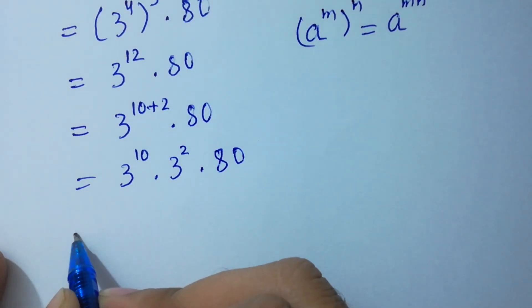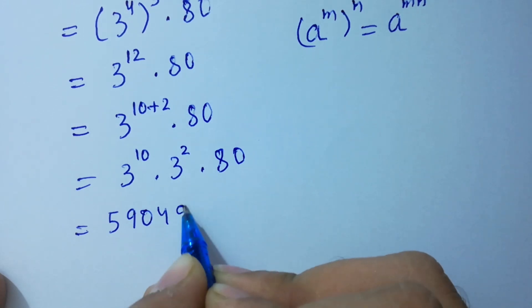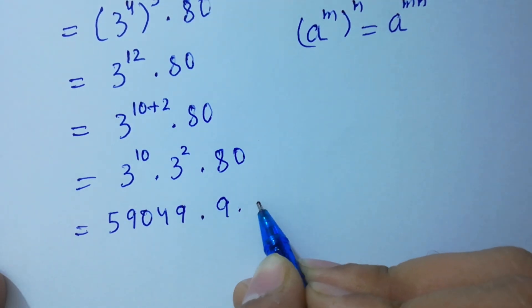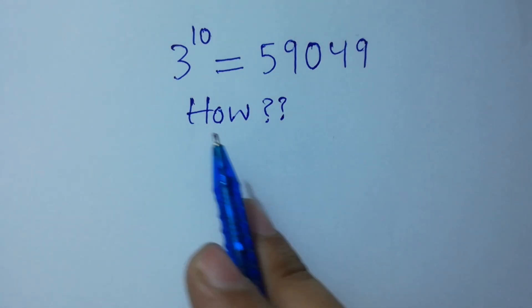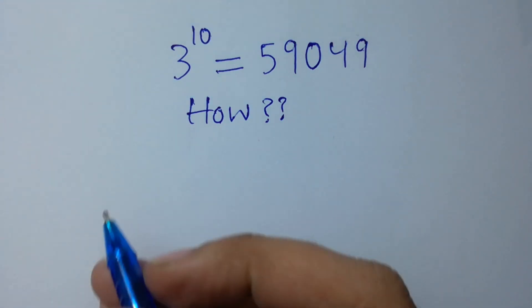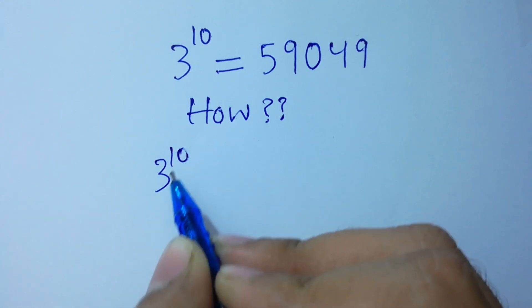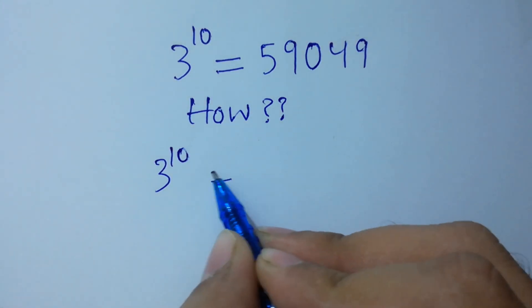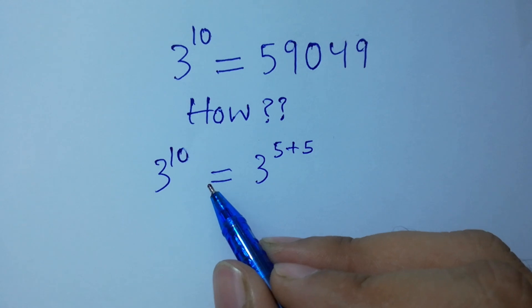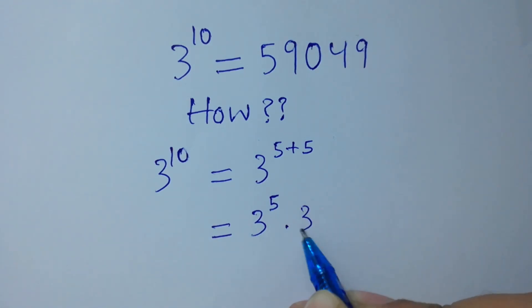Now, 3 to the power 10 equals 59049 — let's solve it. 3 to the power 10 is the same as 3 to the power 5 plus 5, because 5 plus 5 equals 10. So it equals 3 to the power 5 times 3 to the power 5. We can compute 3 to the power 5 by multiplying 3 five times.